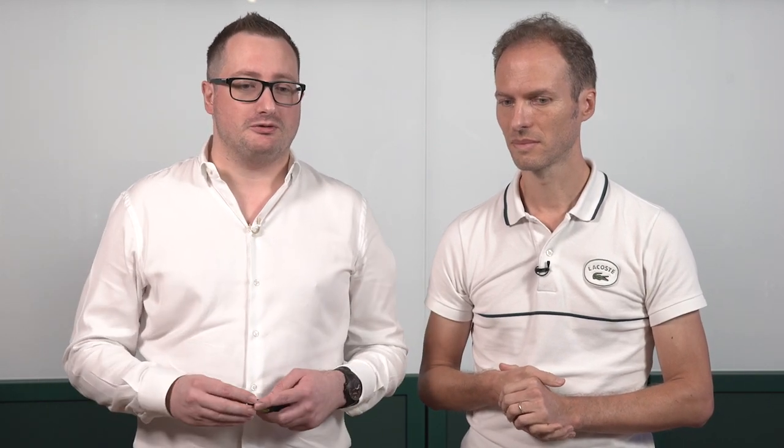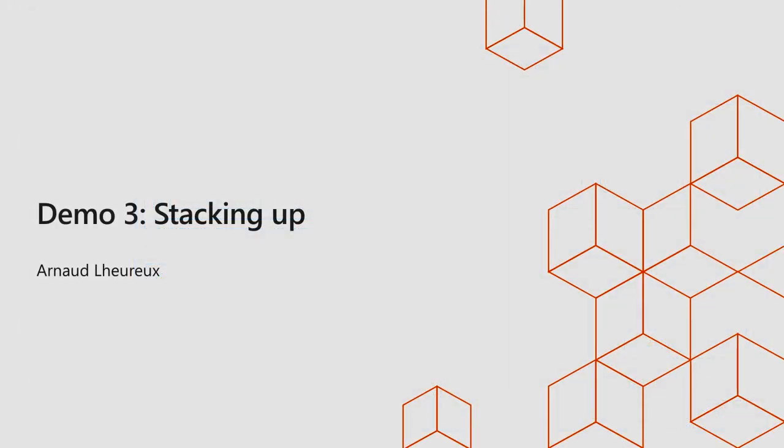We can go much further by accumulating landing zones on top of each other to create a really complex environment. We see here the egress or core network and we added transit. It's very common to add features like egress — for instance, adding a next-generation firewall or a web application firewall for the inbound path, which would be publishing centrally your web applications to the outside world. Let's do that in a demo where we stack up the landing zones in an environment.